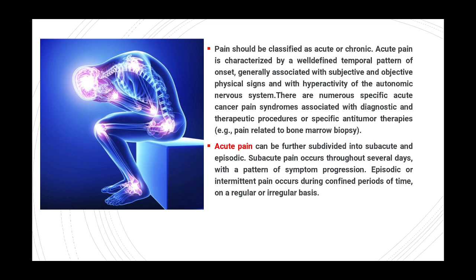Pain can be classified into two major types: acute and chronic pain. Acute pain is characterized by a well-defined temporal pattern of onset, generally associated with subjective and objective physical signs, and with hyperactivity of the autonomic nervous system. There are numerous specific acute cancer pain syndromes associated with diagnostic and therapeutic procedures or specific anti-tumor therapies, for example pain related to bone marrow biopsy.